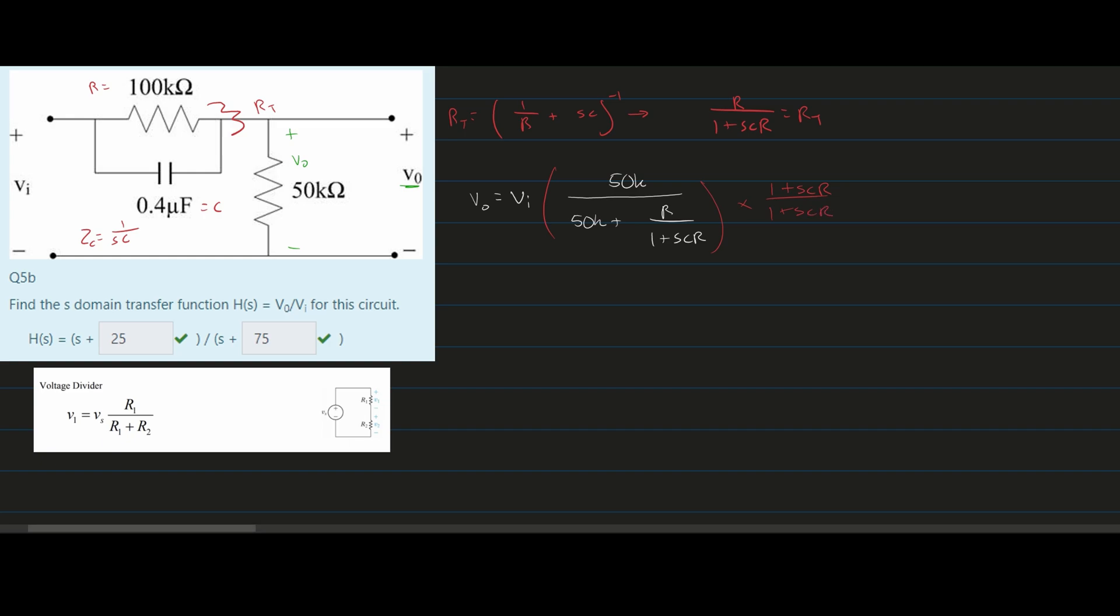If we do this, and we also multiply both sides by 1 over V input, we get V0 over V input equals 50,000 times 1 plus SCR, divided by 50,000 times 1 plus SCR plus R. Now we can start plugging in some values.